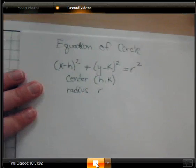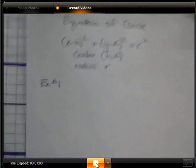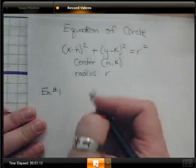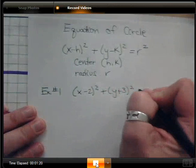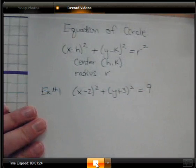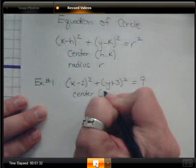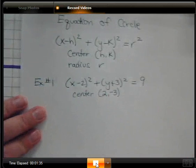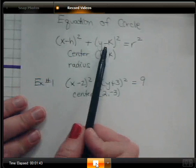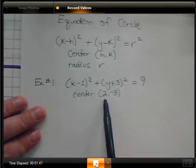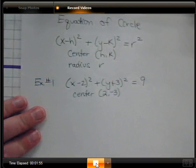Let's look at our first example. Example number one has the equation: x minus 2 squared plus y plus 3 squared equals 9. From that equation, we know the center is 2 comma negative 3. Notice that x minus h gives us a positive h, so x minus 2 gives us positive 2. And y minus a negative 3 is the same as y plus 3, so negative 3 is your y coordinate.